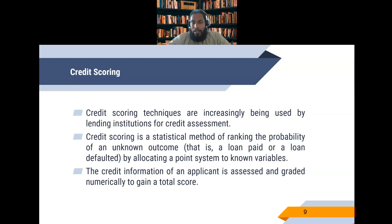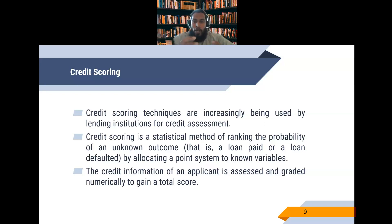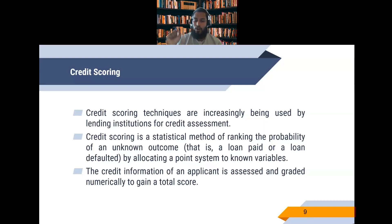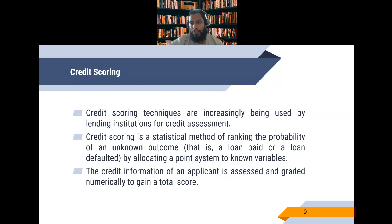Credit scoring is a statistical method of ranking — based on certain criteria, they will rank the probability of an unknown outcome, which means the probability of default — whether the loan is paid or defaulted — by allocating a point system to known variables. In this credit scoring system, they have certain variables or criteria, and they give marks for each. If somebody passes the minimum score, they will be eligible to get credit. The credit information of an applicant is assessed and graded numerically to gain a total score — everything is determined by marks.